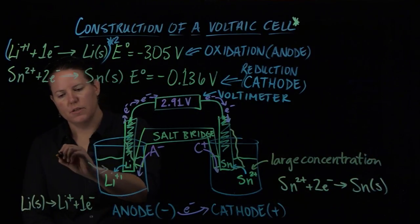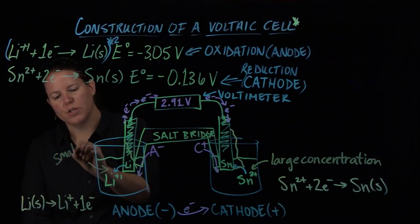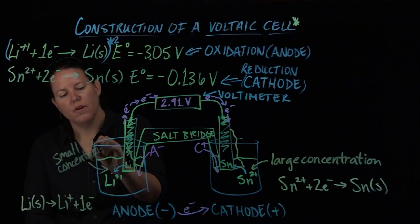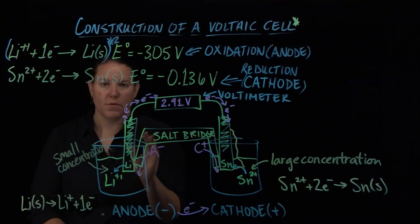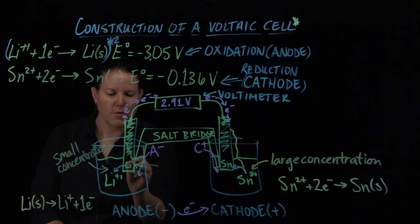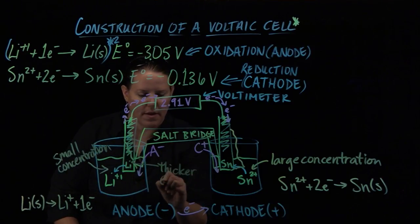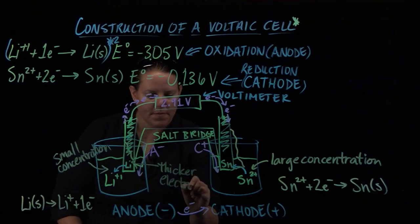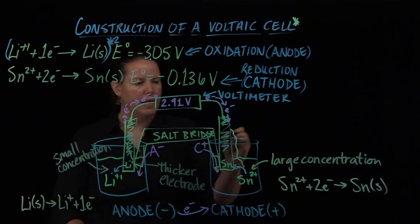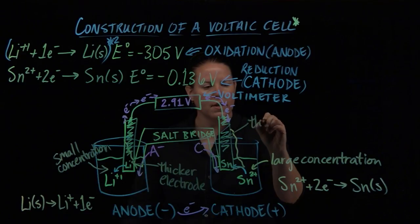So that you have plenty of tin 2+ ions to work with, and you would make this solution a small concentration because it's going to grow larger over time. And you would start off, if you wanted this to run for quite a while, you would start off with a thicker electrode here if you could and a thinner electrode here.